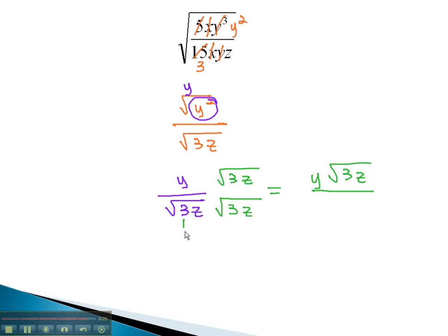In the denominator, we have 3 squared, which comes out as a 3, and z squared, which comes out as a z. There is now nothing left in the radical, and we have just 3z in the denominator. By clearing the radical out of the denominator, we get our final simplified solution.